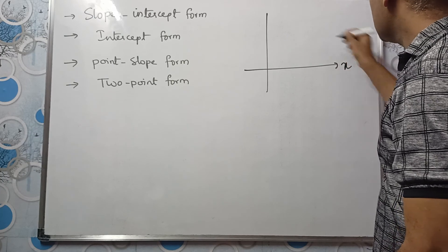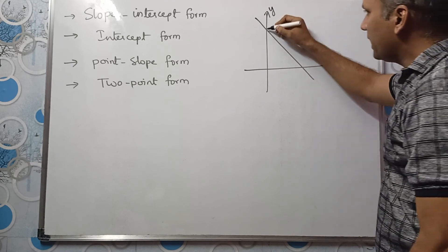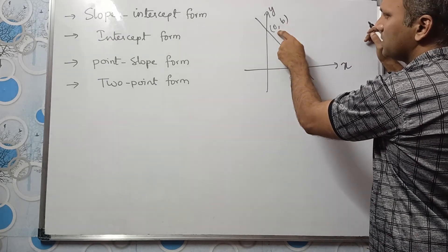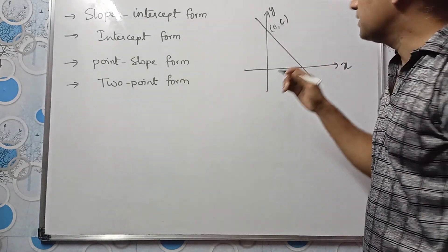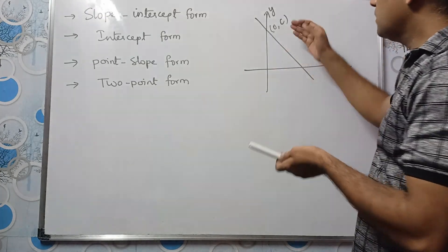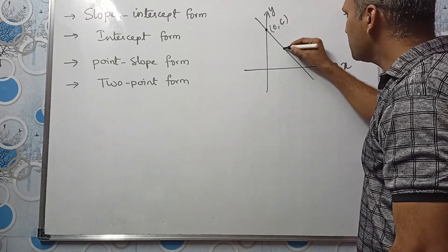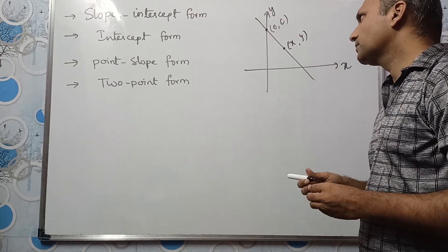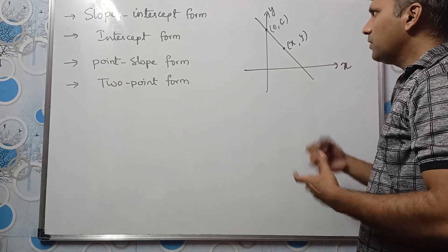If this is our x-axis and this is our y-axis, let us say we have a straight line passing through (0, c). We also have another point (x, y) on this straight line. Now let us find the slope. Slope m equals (y2 - y1) / (x2 - x1). Taking (0, c) as (x1, y1) and (x, y) as (x2, y2), we get m = (y - c) / x.